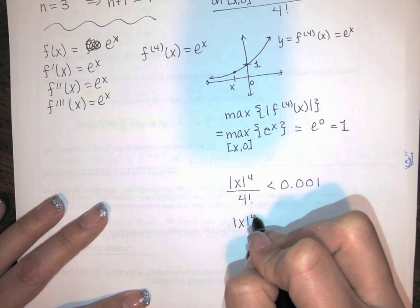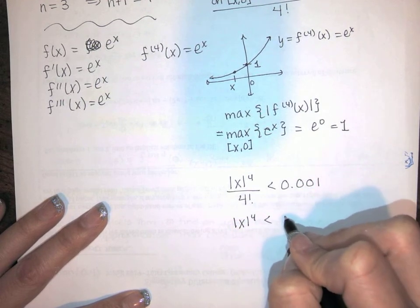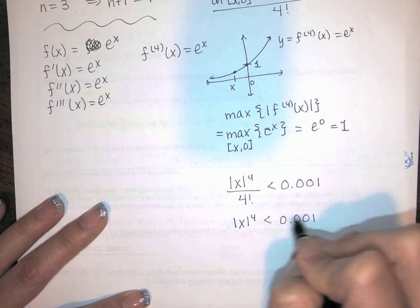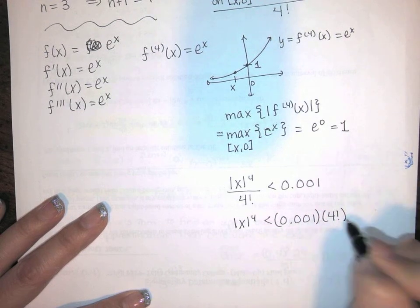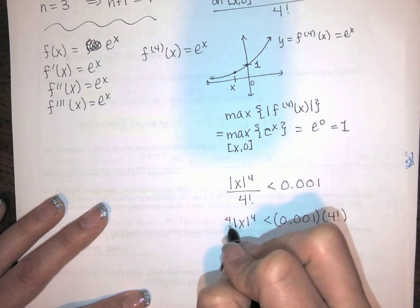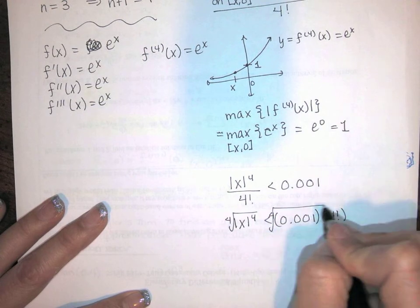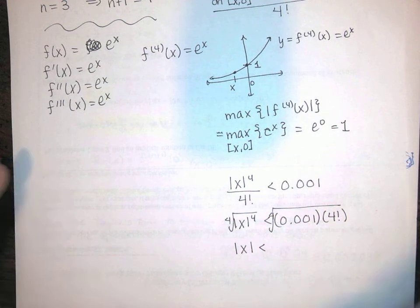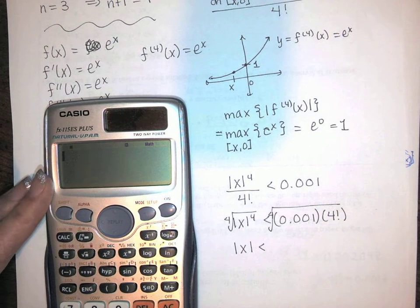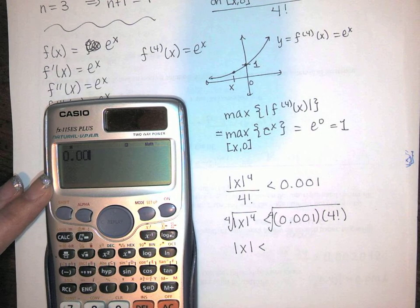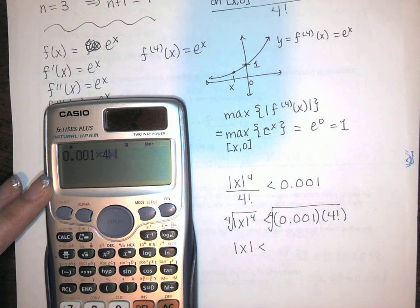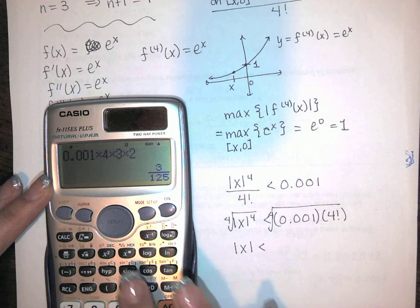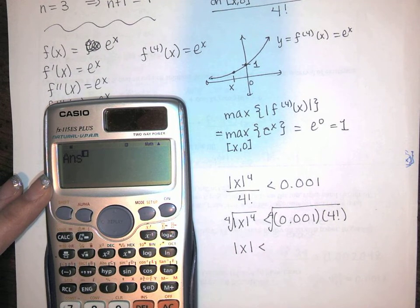So we're just going to solve for x. Multiply both sides by 4 factorial. And then take the 4th root of both sides. And you'll get the absolute value of x is less than 0.001 times 4 factorial. That's 4 times 3 times 2. And then take that whole thing, and you're taking the 4th root, so raise it to the 1/4th power.